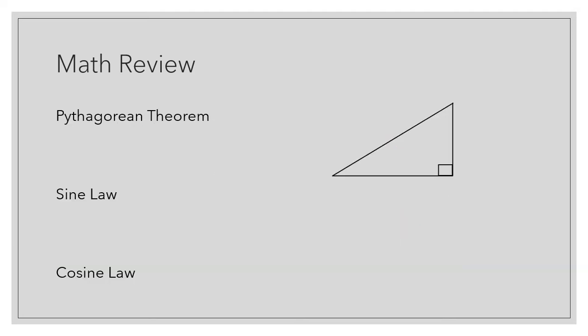You should also recall the Pythagorean theorem, which states that a squared plus b squared is equal to c squared, where c is the hypotenuse and a and b are the two legs.